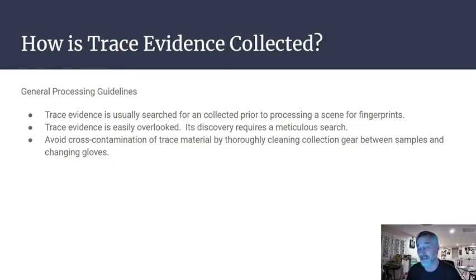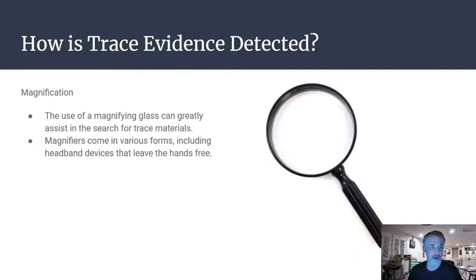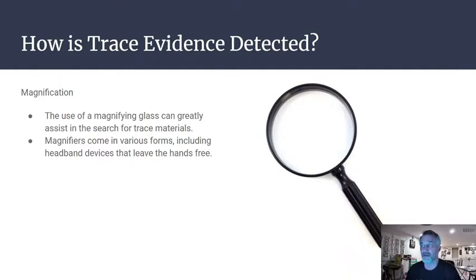Trace evidence is easily overlooked and requires a meticulous search. We must avoid cross-contamination by thoroughly cleaning collection gear between samples and changing gloves. Magnification is important — a magnifying glass can greatly assist the search for trace materials, which could be a single hair or fiber in an inconspicuous location. Magnifiers come in various forms including handheld and headband devices that leave your hands free.